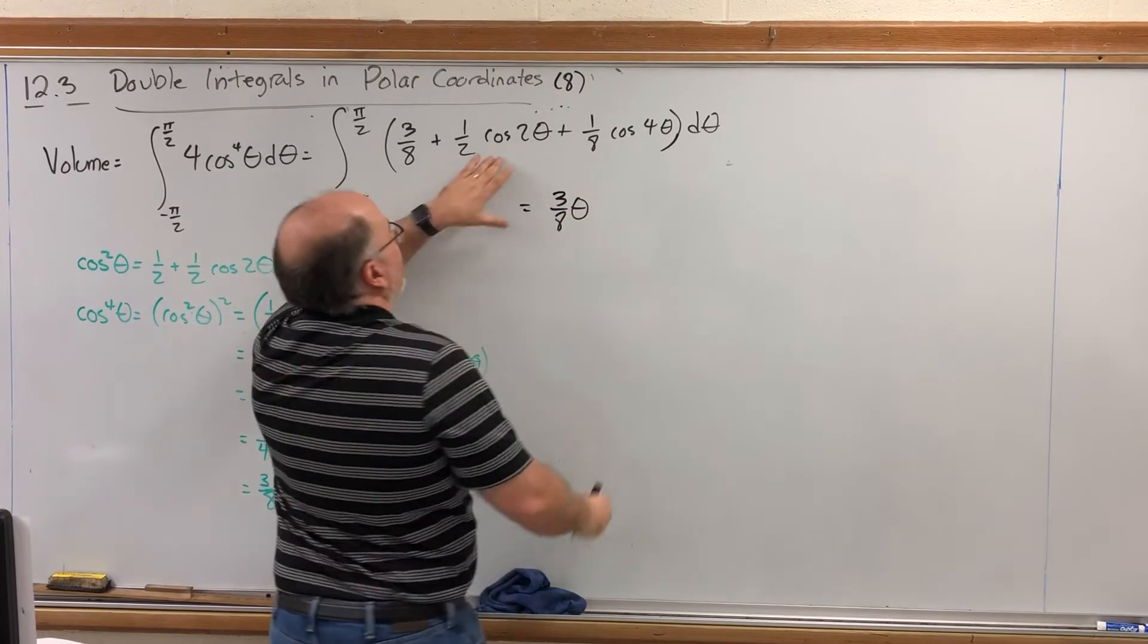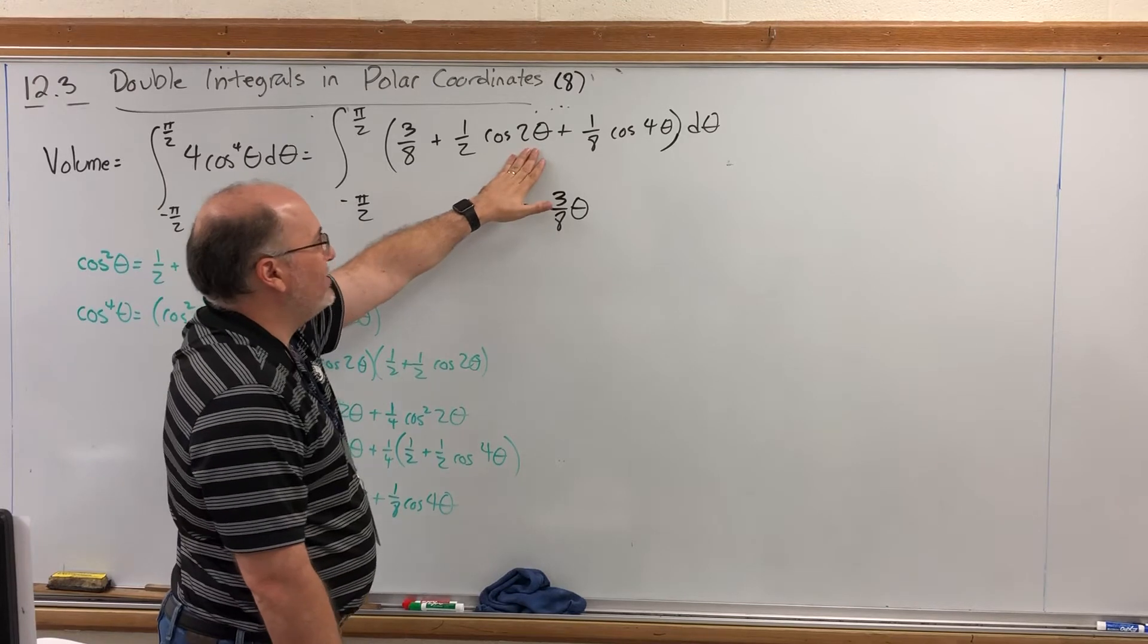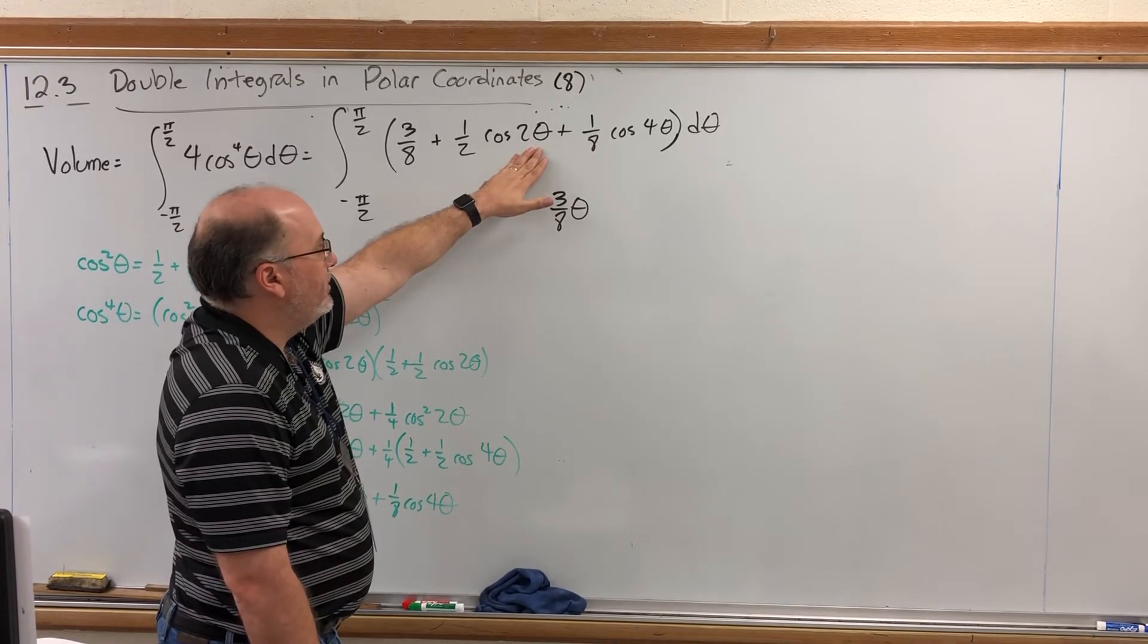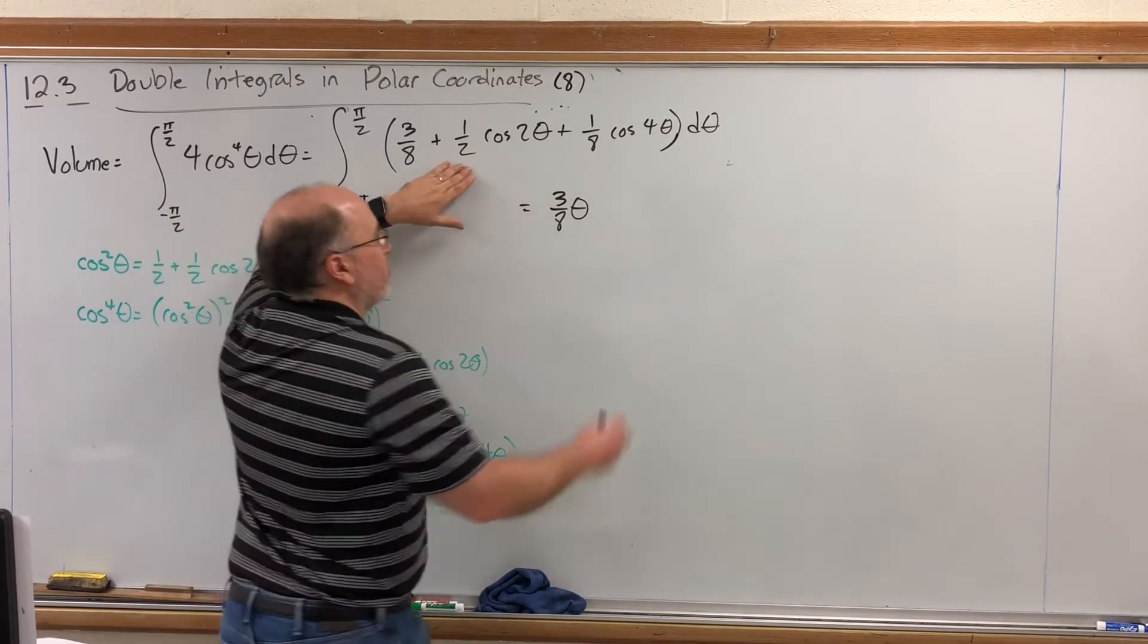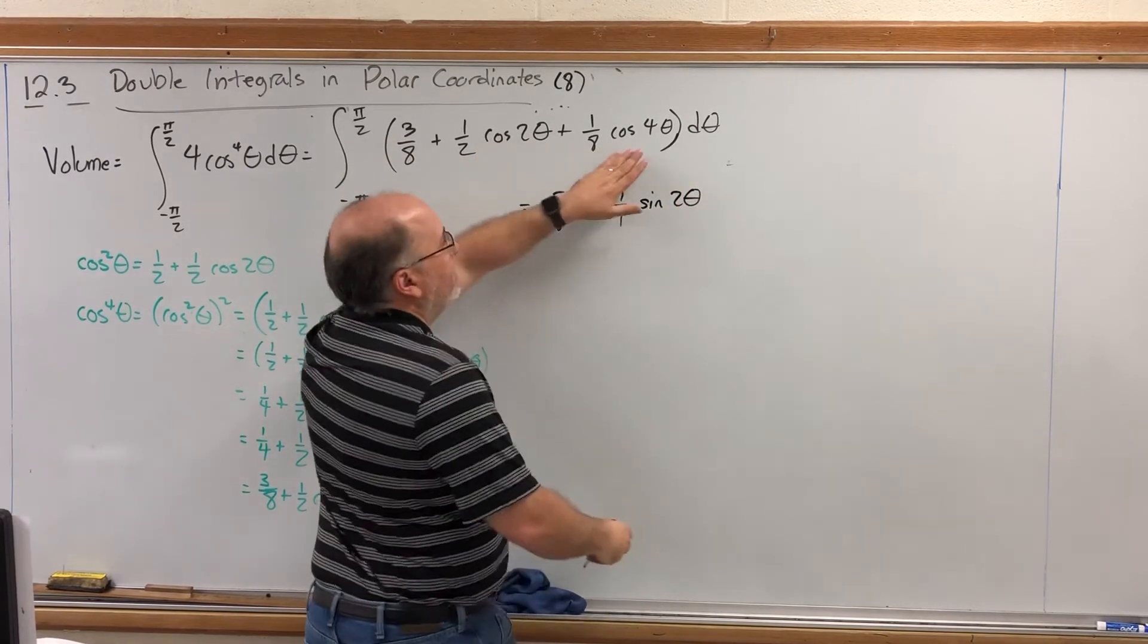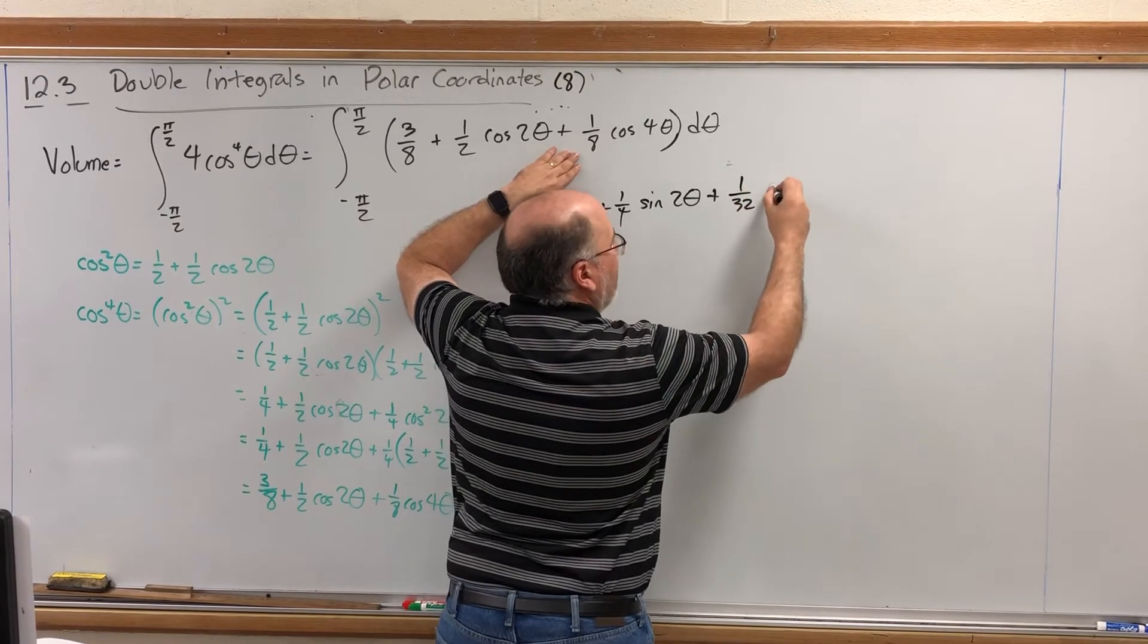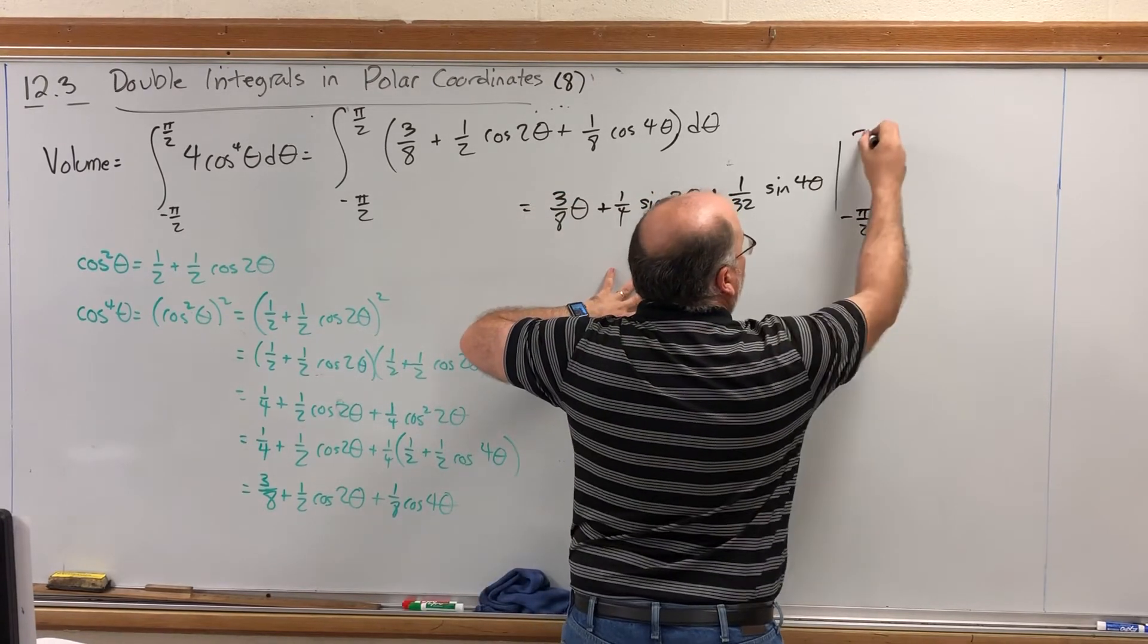The integral of three eighths with respect to theta is three eighths theta. The integral of one half cosine of two theta would require a u substitution but basically we just need to balance out the du with its reciprocal. If I said u equals two theta then du would be two d theta and so I would need a two and balance it out with an extra one half so this one half would become a one-fourth and the integral of cosine is sine two theta. Same thing here except we would balance out the du with a one-fourth so the one-eighth would get multiplied by one-fourth to make one thirty-second and get sine of four theta. This is all getting evaluated from negative pi over two to pi over two.